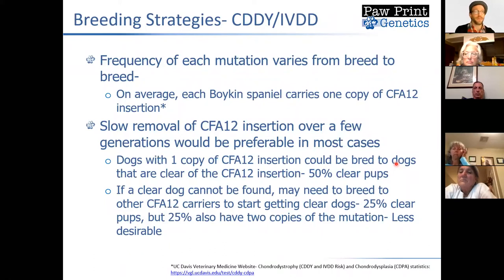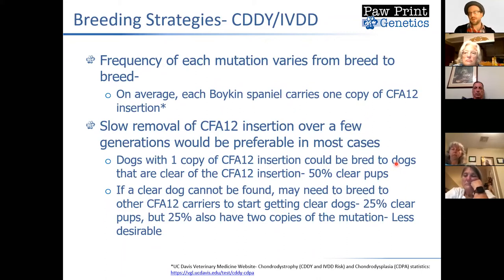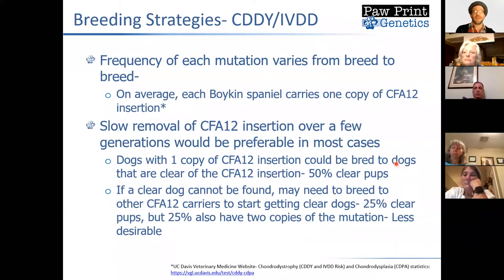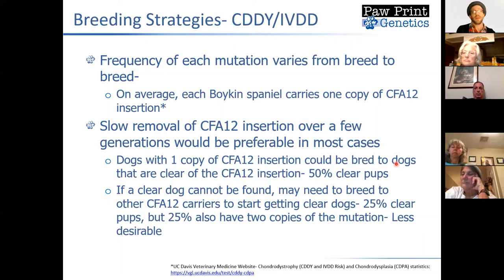If a clear dog couldn't be found and you bred a dog with one copy to another dog with one copy, you would expect only about 25% of pups to be clear — the remaining 75% would either have one or two copies, which is not an ideal situation. In the case of a dog with two copies bred to a clear dog, you won't get any completely clear puppies, but they will all have one copy. If you then breed one of those to a clear dog, you'll start getting more clear dogs. It can take up to a couple of generations to really start eliminating this from your line, but it can be done — and this is the preferential way because we're not eliminating all the other genetic diversity that these dogs have.